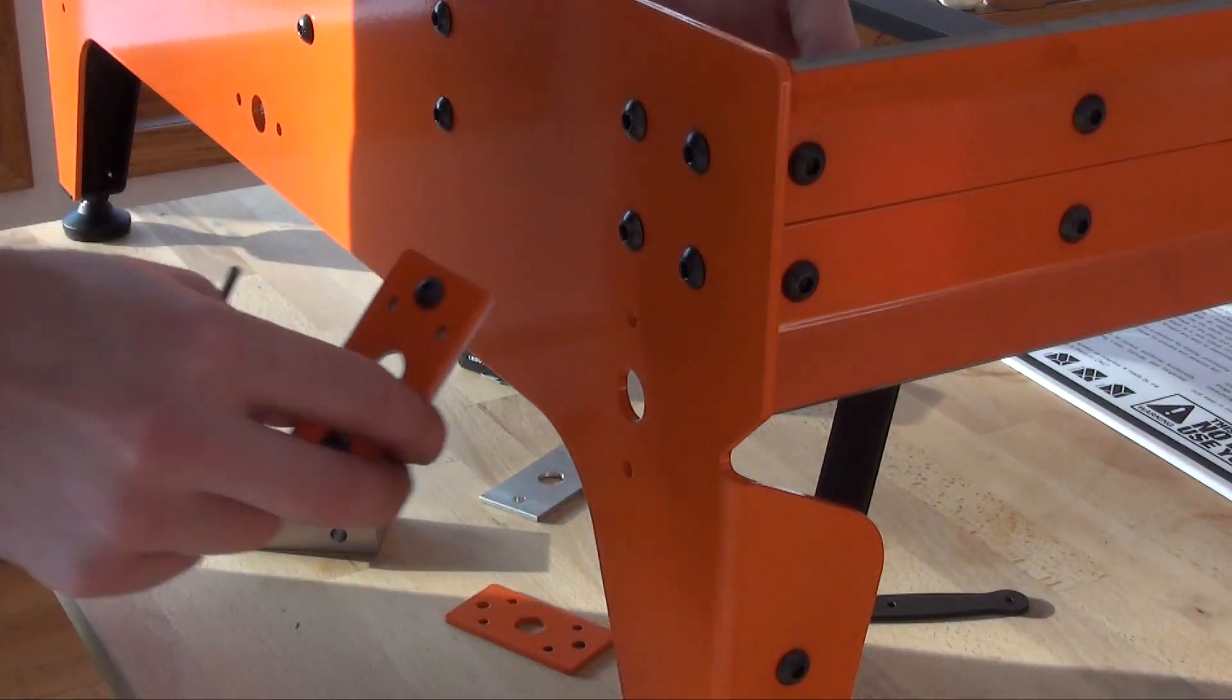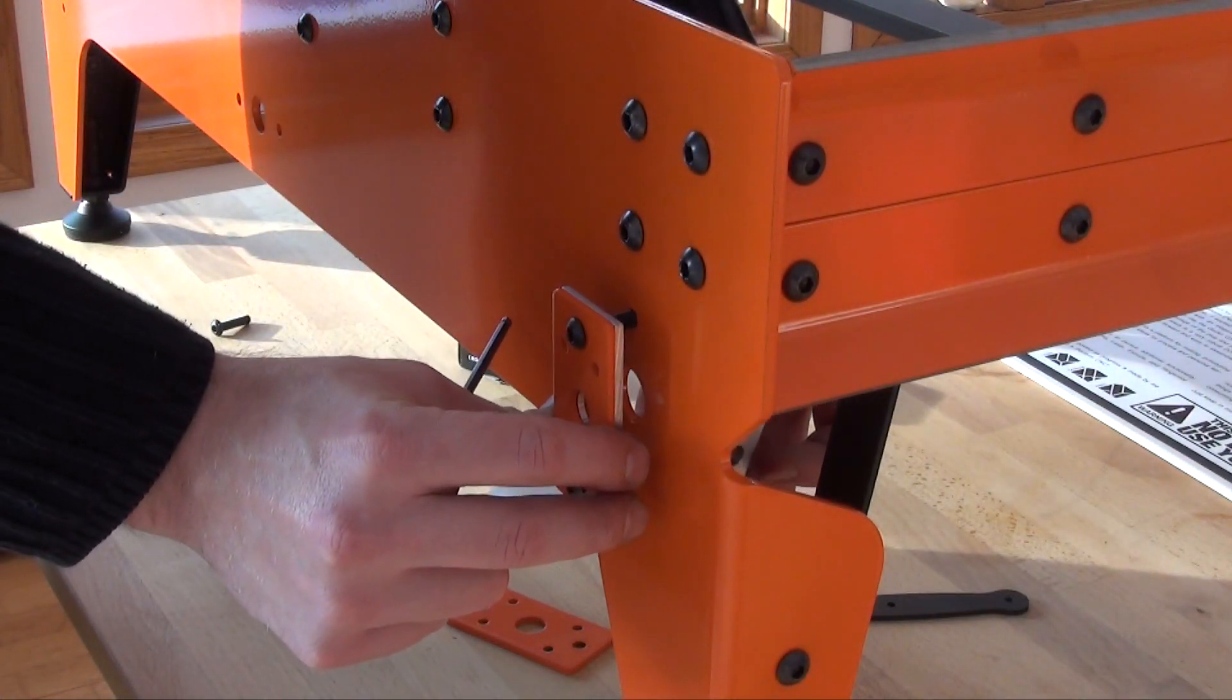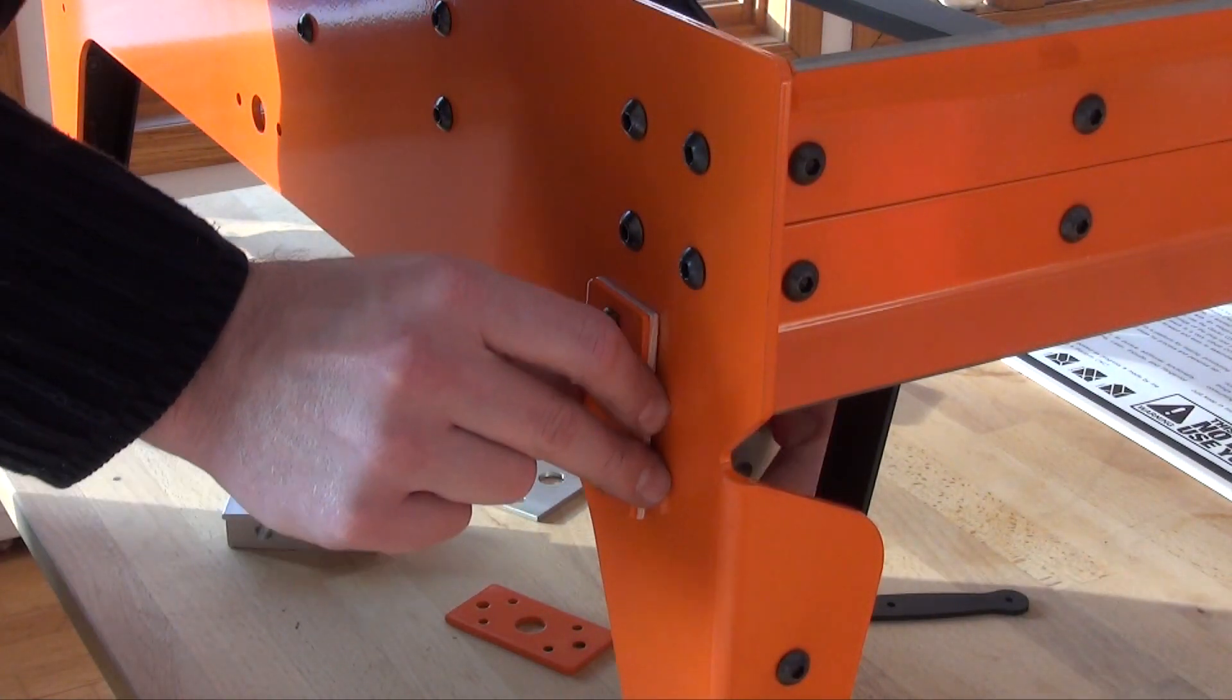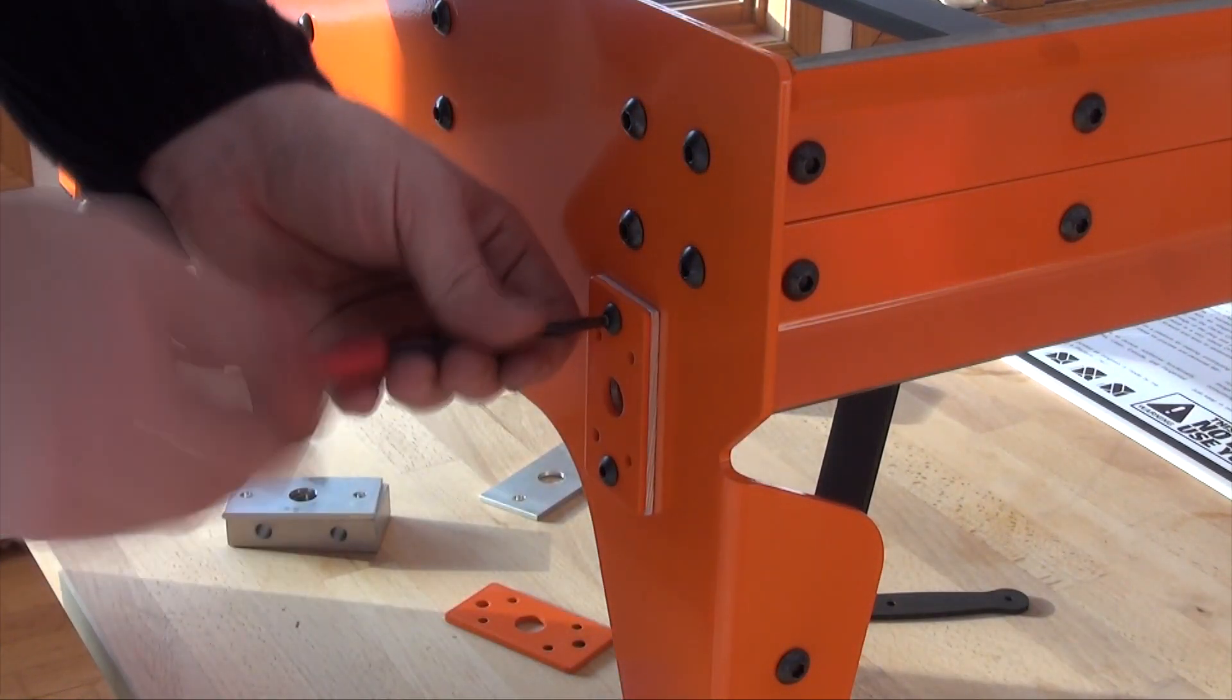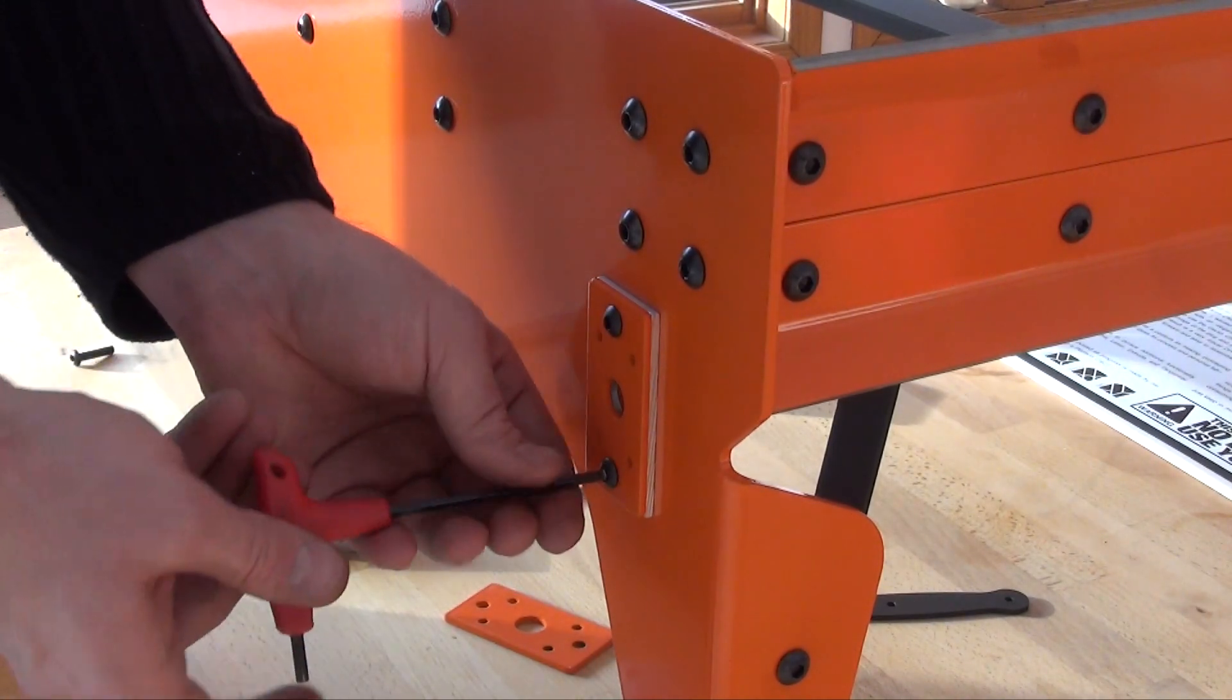Next, install the bearing block and tensioner plate on the rear leg of the table. Placing the bearing block cover under the tensioner plate avoids any damage to the powder coat. This was actually a great suggestion by another owner.